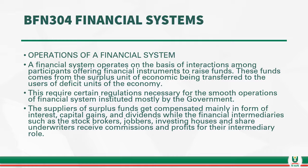And specifically by the Apex Bank, which is the Central Bank of Nigeria. The suppliers of surplus funds get compensated mainly in the form of interest, capital gains and dividends. This means you don't invest your money without any compensation or returns. The expectation is that when you invest your money in any market for the issuance of these instruments, you get interest, capital gains and dividends. While the financial intermediaries, such as the stockbrokers and jobbers that make the intermediation possible, are also entitled to commissions and profits for their intermediary role.